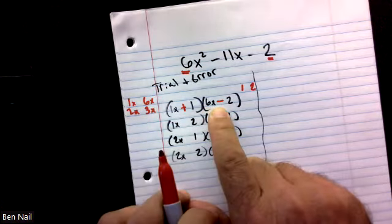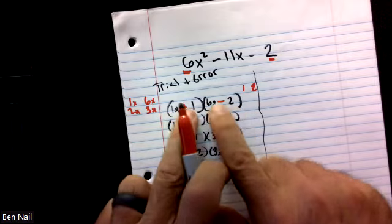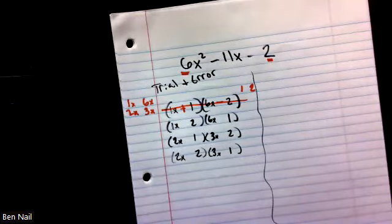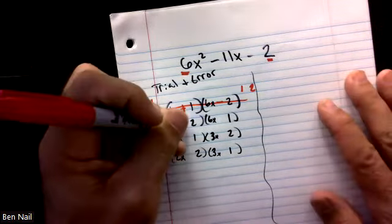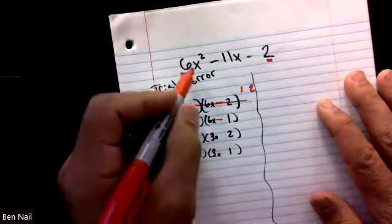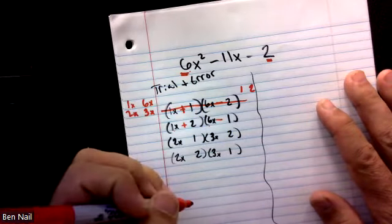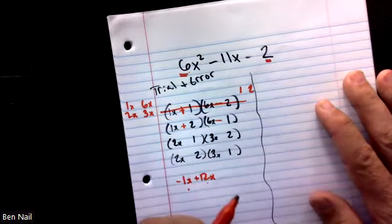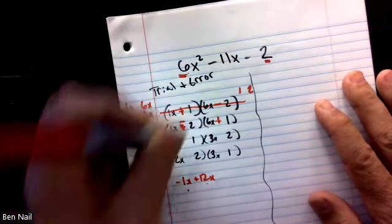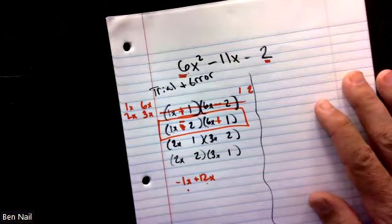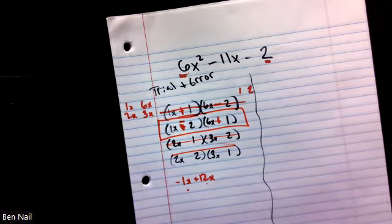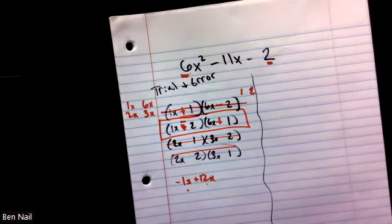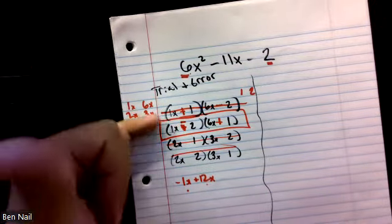With trial and error, you try combinations and see which ends up working. Testing 1x times 6 gives 6x squared — good. But 1 times negative 2 and 1 times 6x gives 6x minus 2x, which is 4x — not negative 11. Trying another combination: 1x times negative 1 is negative 1x, and 2 times 6x is 12x. 12 minus 1 is 11 — not negative, but if I flip the signs, this ends up being the correct combination. Most people don't like trial and error because you don't want to do a bunch of math that doesn't get you points.